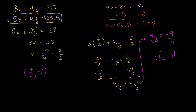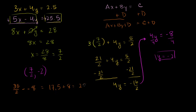Let's verify this satisfies the bottom equation too. 5 times 7/2 is 35/2, minus 4 times negative 2 is minus negative 8 — that's 17.5 plus 8, which equals 25.5. That indeed equals 25.5, so this solution satisfies both equations.